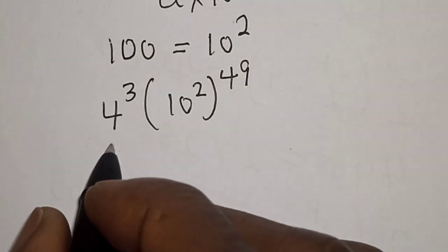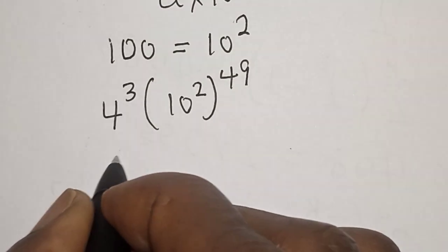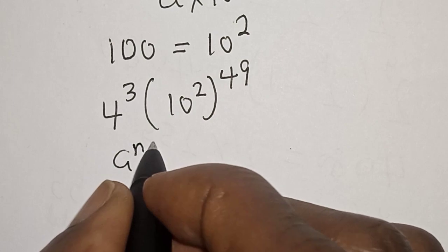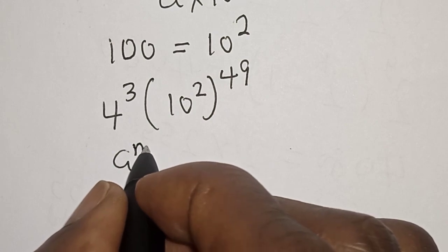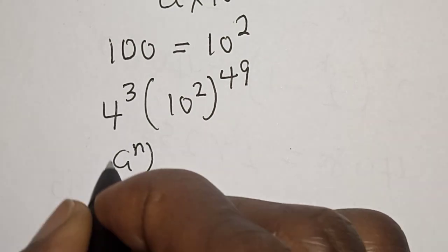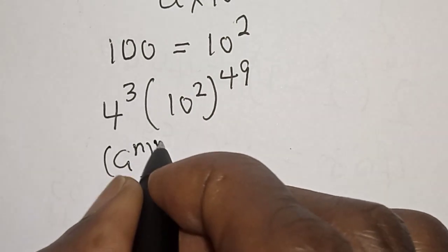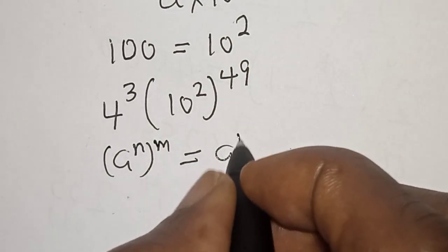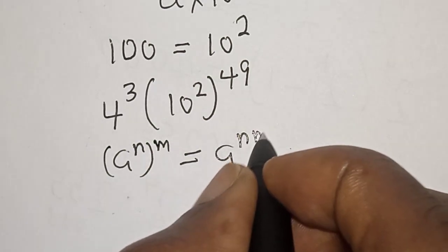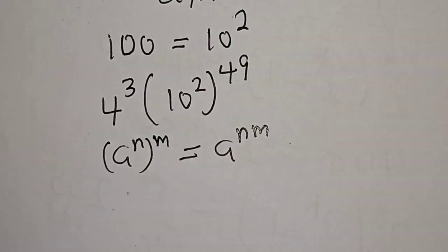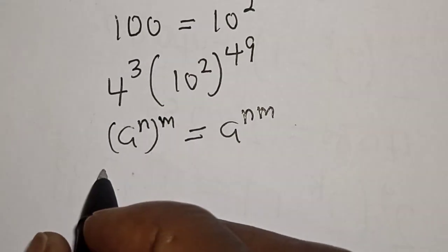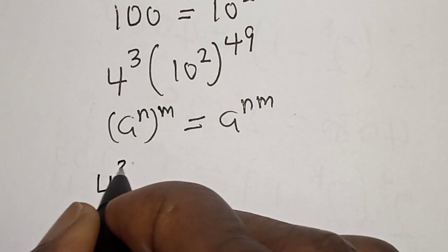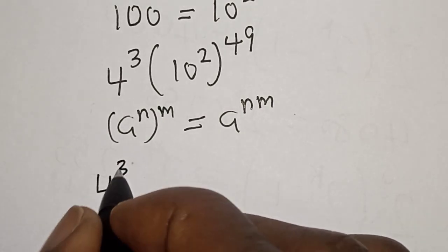Also recall that a raised to power n, raised to power m, is equal to a raised to power n times m. Now 4 raised to power 3 multiplied by 10 raised to power...